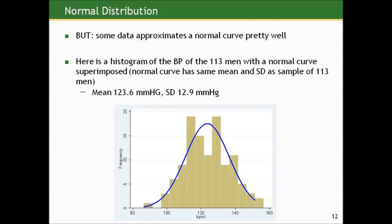For example, some data does approximate a normal curve pretty well. Here's a histogram of the blood pressure of the 113 men we looked at before with a normal curve superimposed. The normal curve here has the same mean and same standard deviation as the sample of 113 men. You can see it's not a perfect fit, but it wouldn't be too far-fetched to say that that sample data displays in line with something that's similar to a normal distribution.